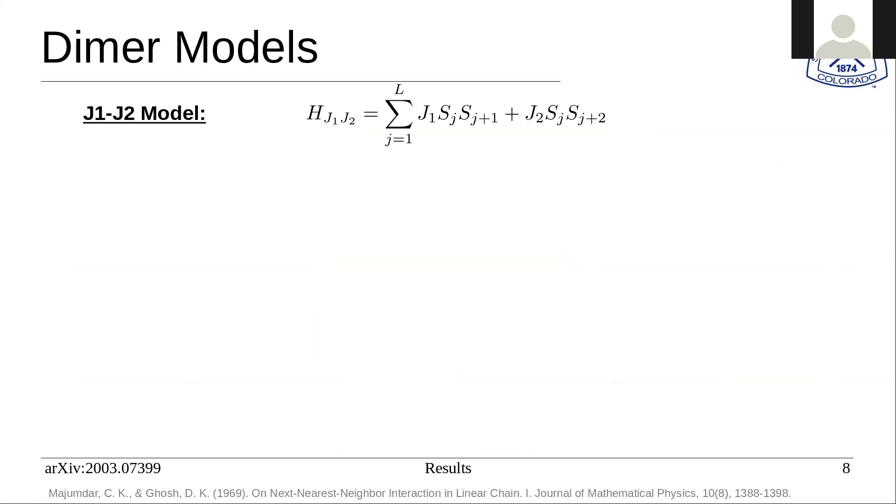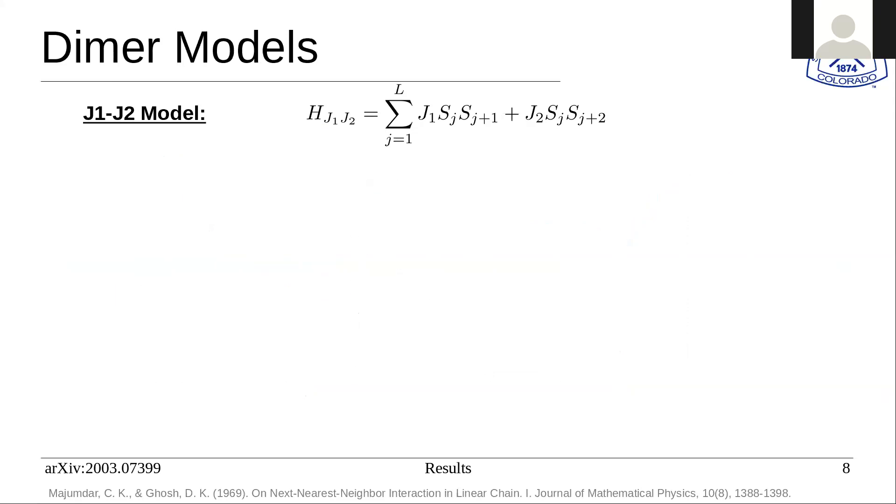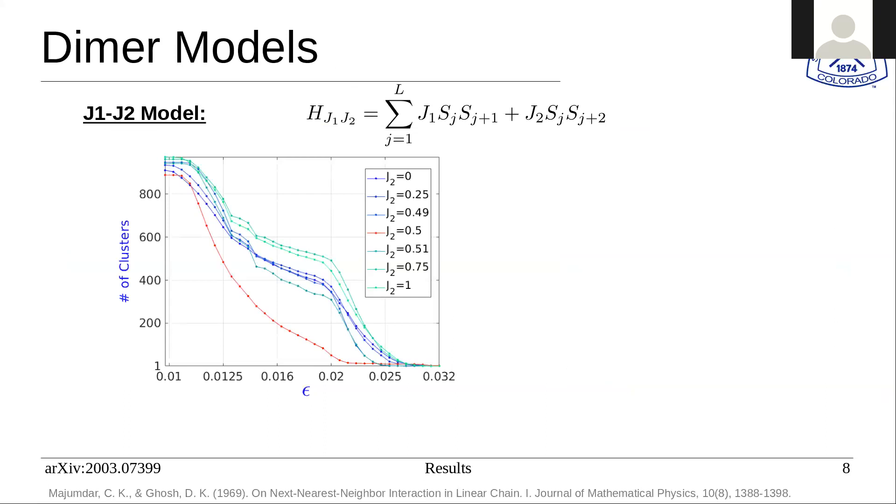Another model that we explored, a little bit more complicated of a phase transition, is the J1-J2 model. This is a dimer model, it undergoes a valence bond-like transition, or a valence bond solid transition. Here we show the number of clusters and its dependence on epsilon. This is the number of clusters that you get from the diffusion map method. We feed in the samples and generate these samples using exact diagonalization. It's a large data set of classical bit strings at different values of J2. Here J1 is set to one. We feed this into the algorithm and we tune epsilon.